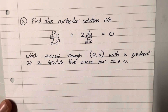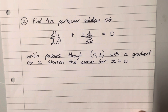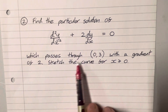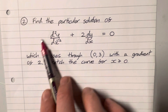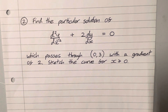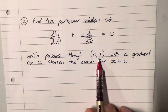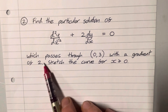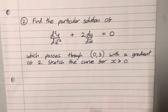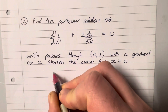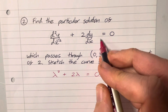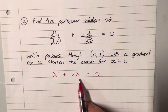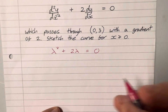Now particular cases — let's find a particular solution of this second order differential equation that satisfies the equation and passes through the point (0, 3) with a gradient of 2. To find a particular solution you need the differential equation and some extra information. Because it's a second order equation we need two pieces of information. Jumping to the auxiliary equation: lambda squared plus 2 lambda equals zero — there's no y term so no constant term in the auxiliary equation.